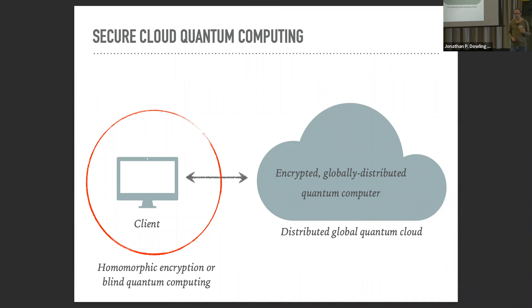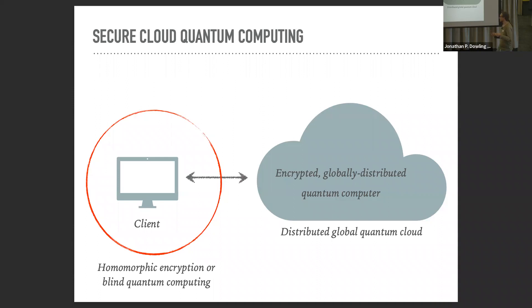We can do much better using two types of encryption: homomorphic encryption and blind quantum computing. Both allow you to outsource a computation in a way that it is processed in encrypted form without being first decrypted. I'll explain a toy model showing how that idea works.